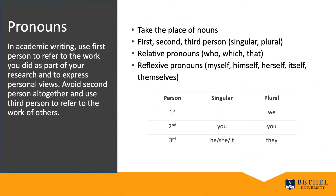Pronouns take the place of nouns. We have first, second, and third person pronouns, singular and plural. We have three relative pronouns — who, which, and that — which I'll explain more about later, and reflexive pronouns like myself, himself, herself, itself, and themselves. This chart will help you understand what writing in first, second, or third person means, with singular pronouns I, you, he, she, it and plural pronouns we, you, they.